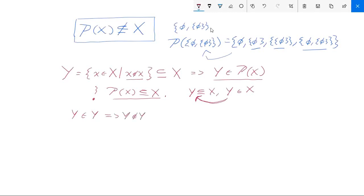But if Y did not belong to itself, then it satisfies the defining property of being the set Y, and therefore Y must belong to itself. And thus we find, following this through, we get a contradiction. We find that Y belongs to itself if and only if it does not belong to itself.